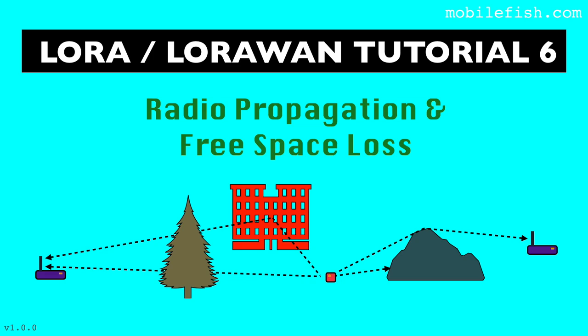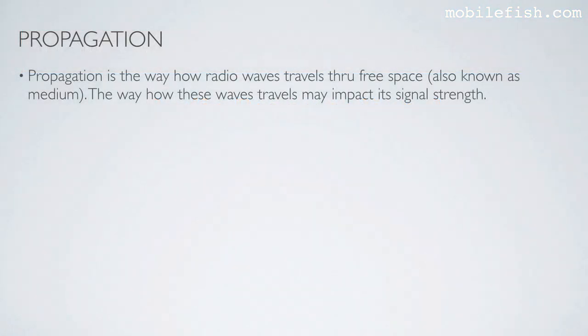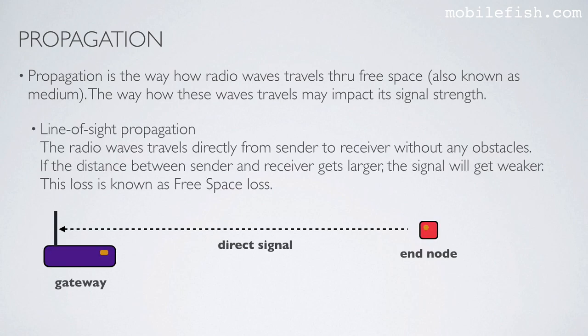In this tutorial I will explain what radio propagation and free space loss are. Propagation is the way how radio waves travel through free space, also known as medium. The way how these waves travel may impact signal strength. Here are some examples.